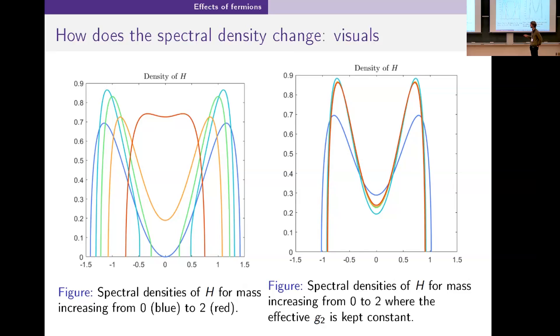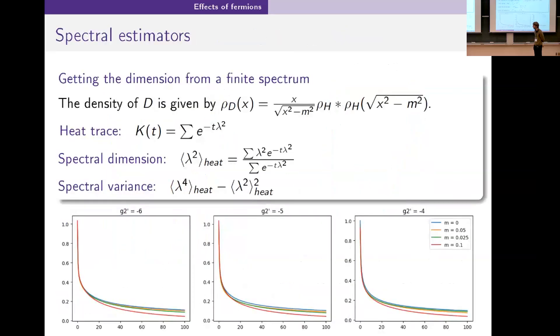If you correct for that, if you keep the effective second coupling constant fixed and then change the mass, you see the effect is much less dramatic. We know roughly the effect that the mass has on these spectral densities.